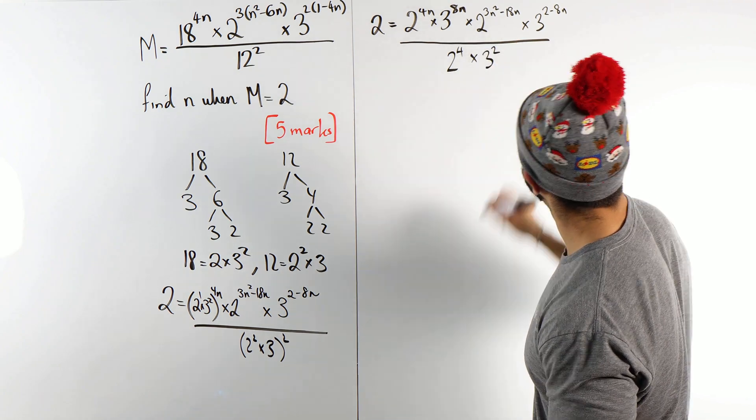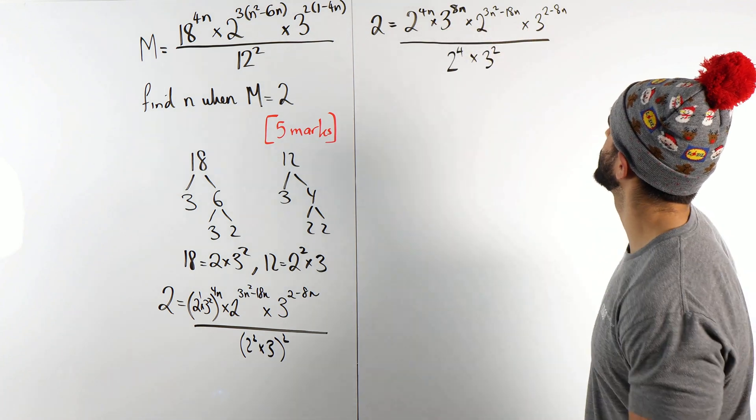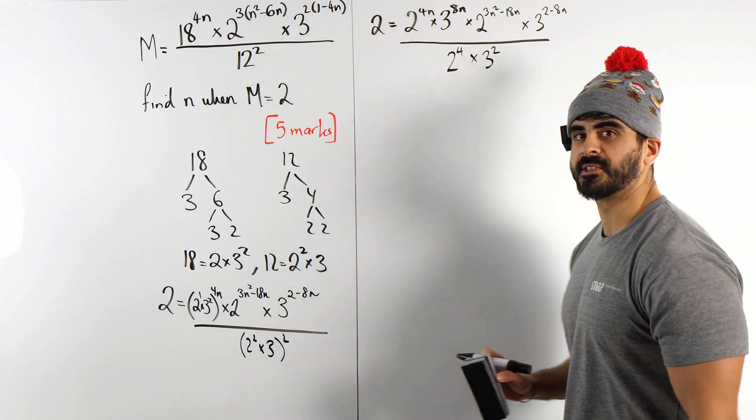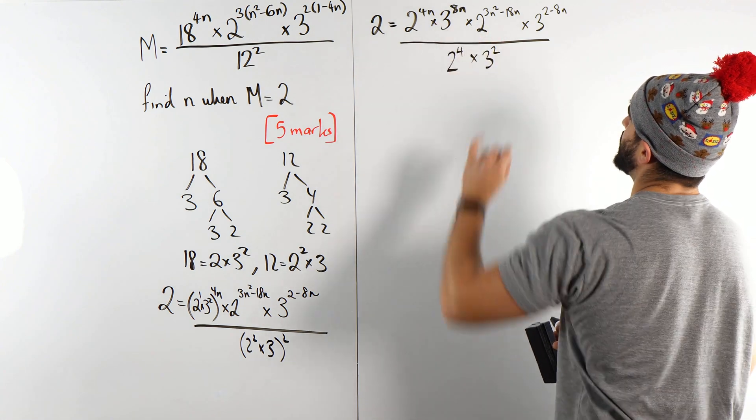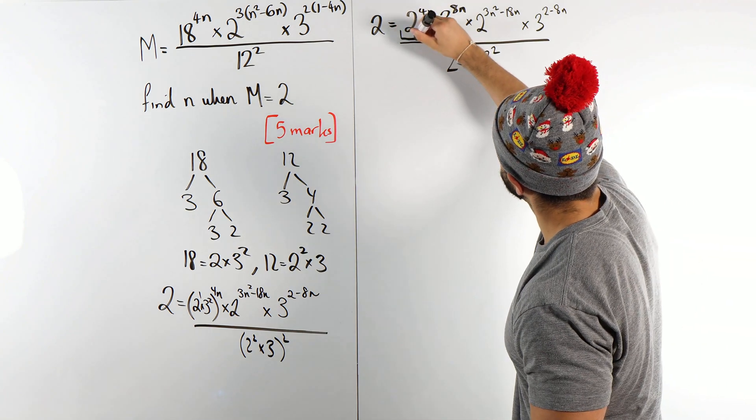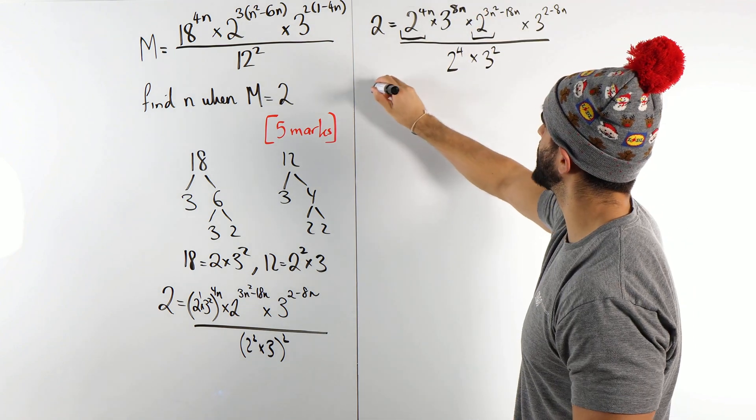Now remember, we're not simplifying these, because now look, everything is in terms of base 3 and base 2. That is beautiful. The next thing we're going to do is we are multiplying numbers with the same base. What do we do in that situation? We add the powers. So these, I'm going to add their powers. And then I'm going to do the same with the power of 3s.